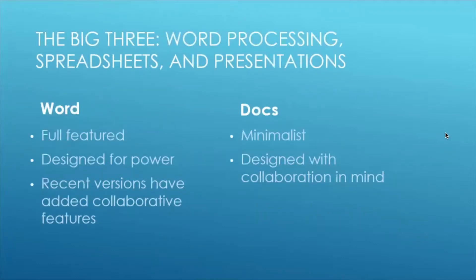Now we'll cover the big three: word processing, spreadsheets, and presentations. When it comes to word processing, we have Microsoft Word and the Google product, which is Docs. Word is very full-featured and is designed to be the premier word processing software on the market. It has gone through many revisions with many features added. Recent versions have added collaborative features that would have previously given G Suite an advantage, and Microsoft does them as well — in some ways even better — because there is no loss of data integrity when everything is native to Microsoft.